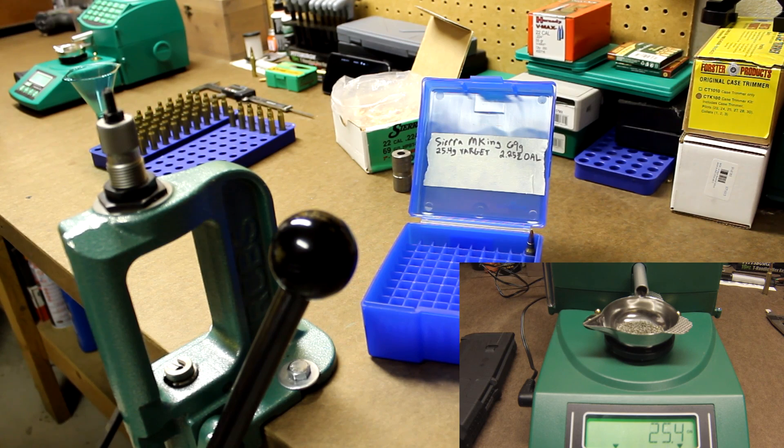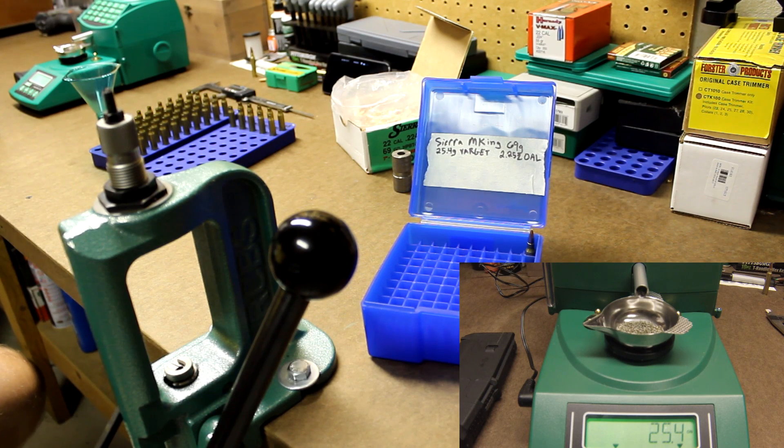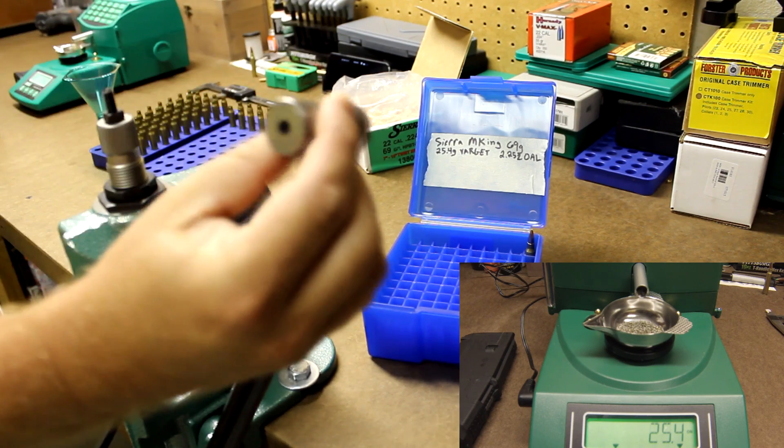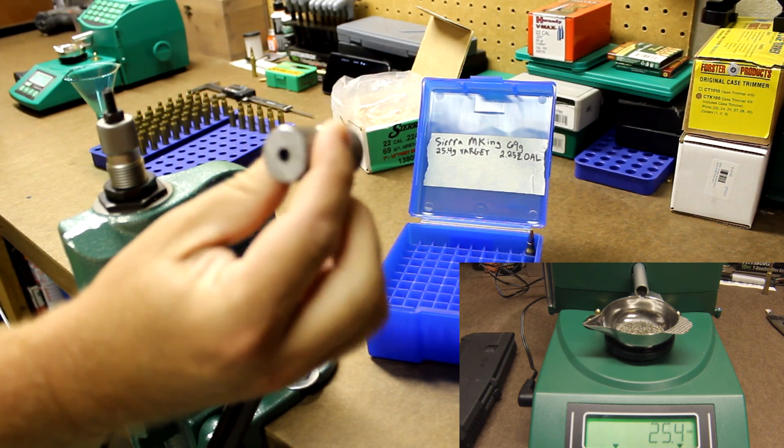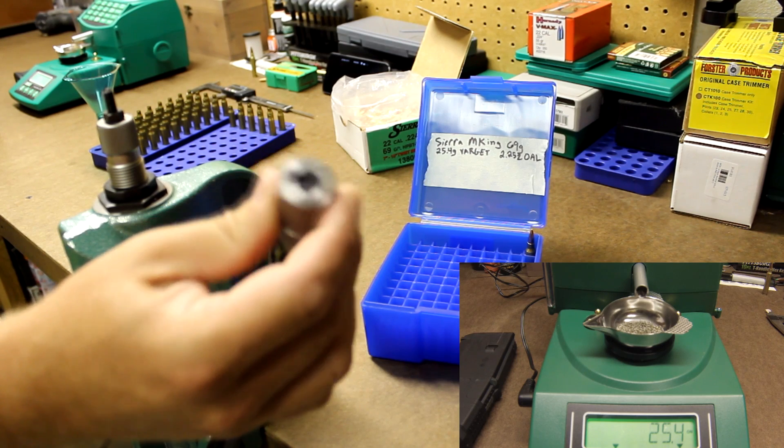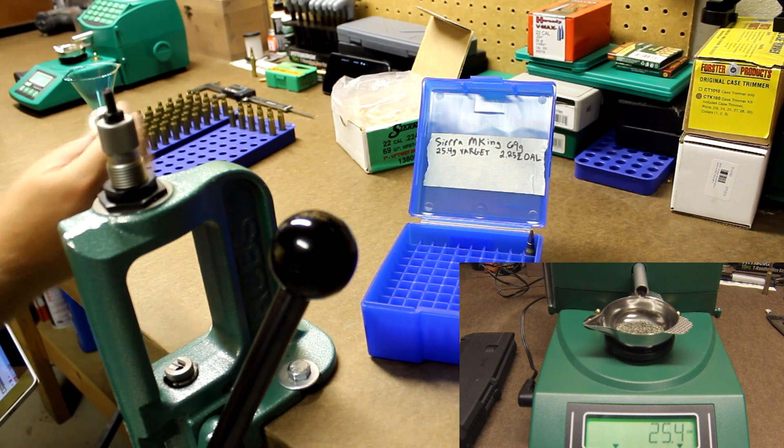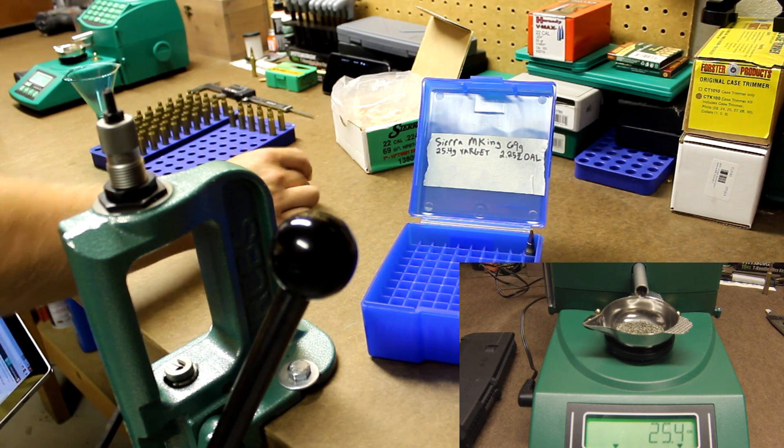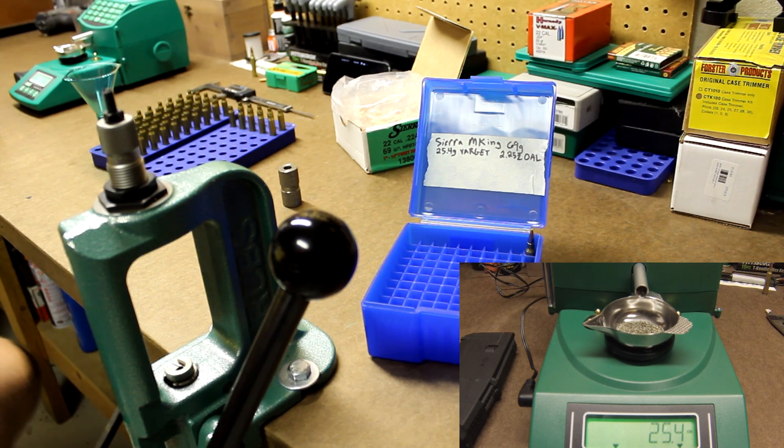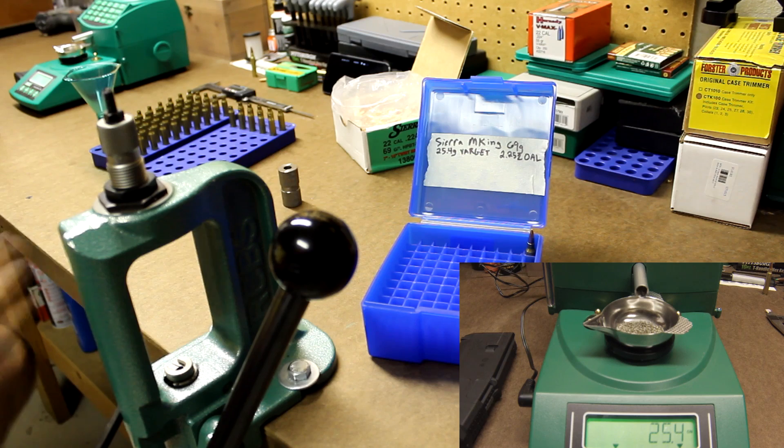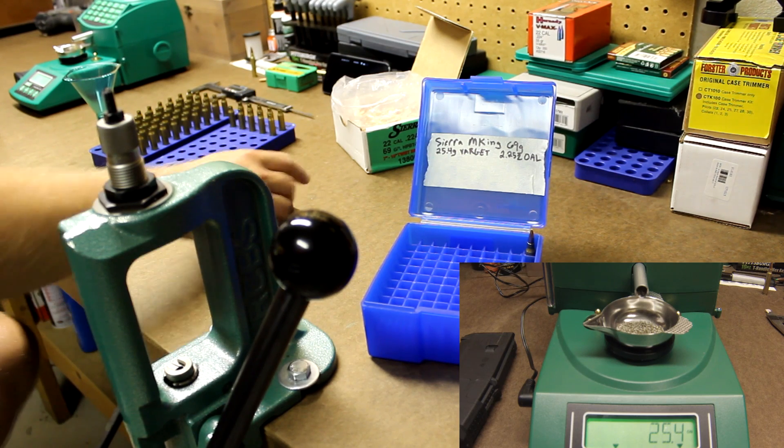Before we start, I want to talk about another tool that you'll need, which is really nice to have, called a case length headspace gauge. This is shown here. I also have a picture of it on my webpage. It's basically a piece of steel machined out to the exact specifications of the caliber that you're reloading. So in my case, this one's 223 Remington.